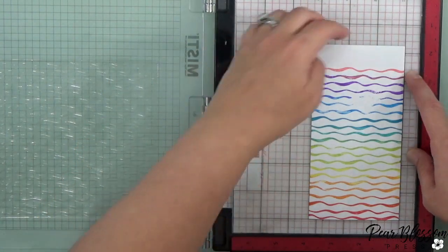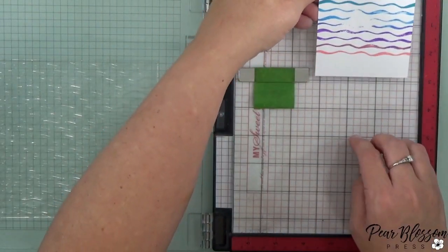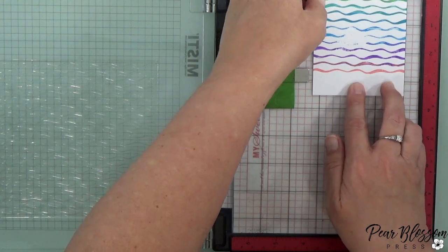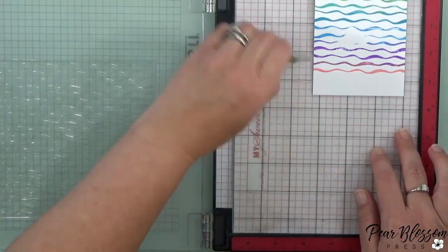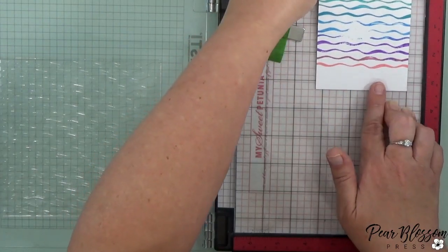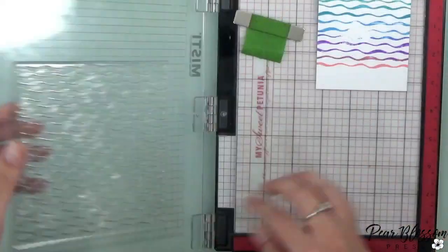And remember I said those wavy lines, they're imperfect. This is not like if you had straight lines—you would definitely notice if they were not 100% spaced out correctly. But because these are wavy and they're just a little whimsical, they lend themselves to stamping all over the place without any issues.